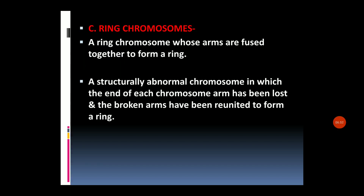The next effect involves the ring chromosome. A ring chromosome is a structural abnormality in which the ends of each chromosome have been lost and the two broken arms have been reunited to form a ring.